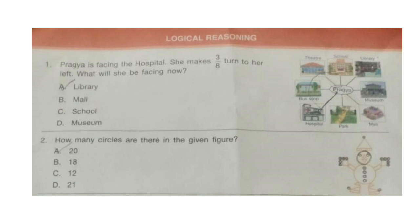Question 1: Pragya is facing the hospital. She makes a 3/8 turn to her left. What will she be facing now? Try to find out your answer. A 3/8 left turn means she is now facing the museum. So the correct answer is option D.